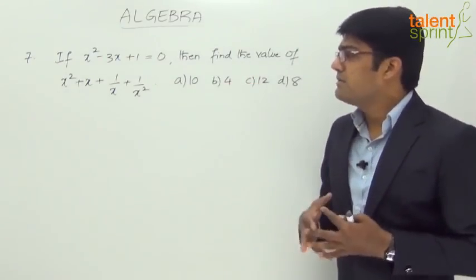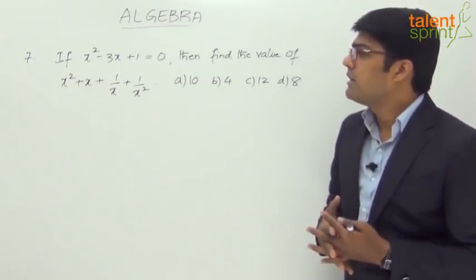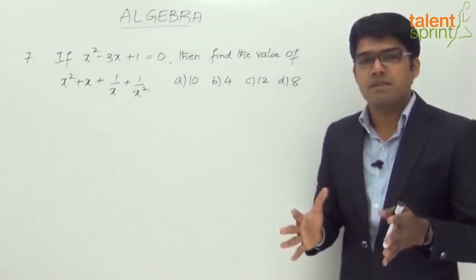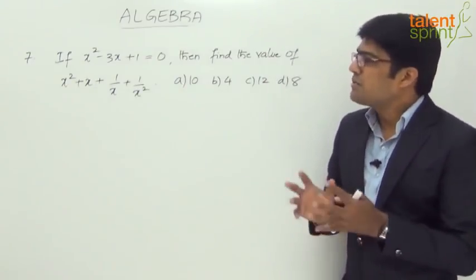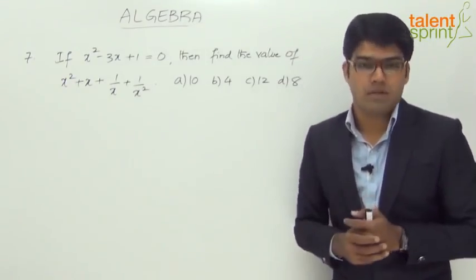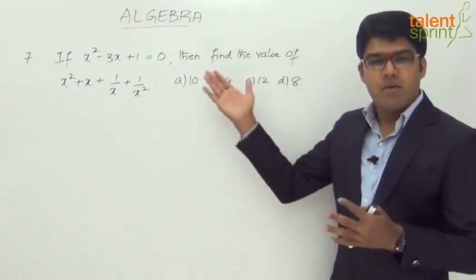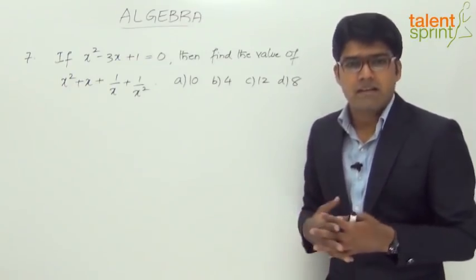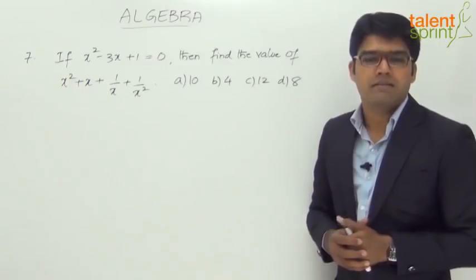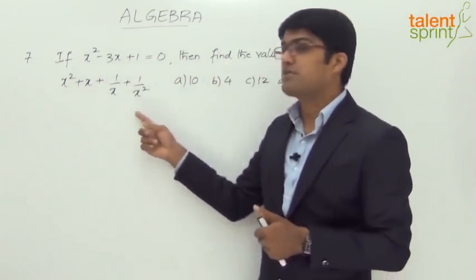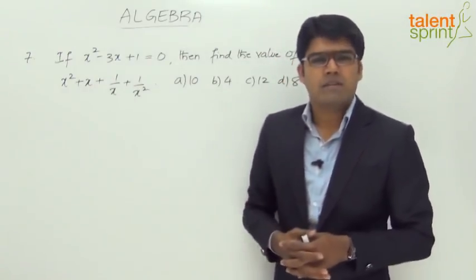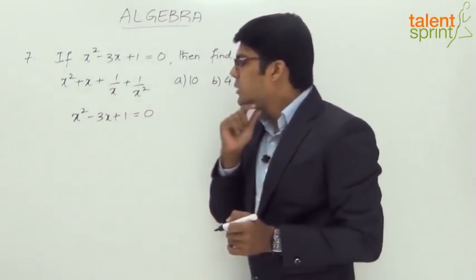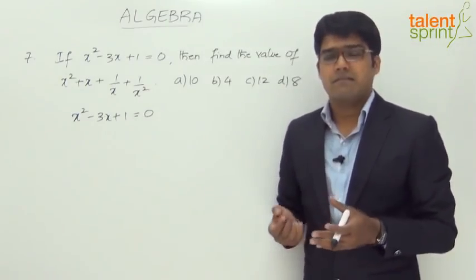But if you look at the given quadratic equation, it looks to be a complicated one. Finding out using factorization is not so simple here, since a into c equals 1 and b equals minus 3. Splitting b as b1 plus b2 such that b1 into b2 equals a into c looks a little complicated. You can refer the video on quadratic equations to understand what a, b, and c mean here. Even if we simplify, we get some irrational value of x.